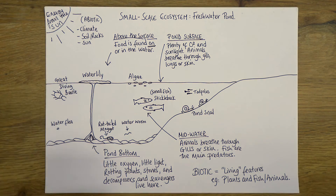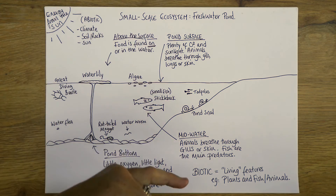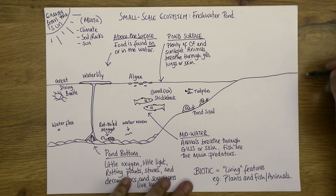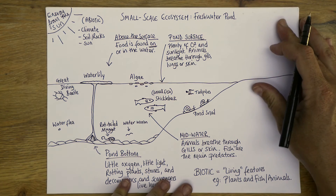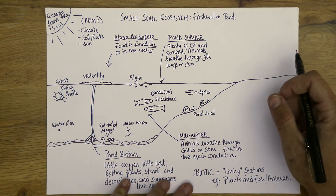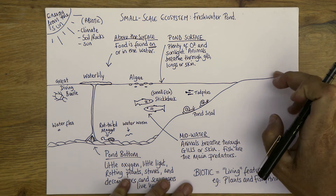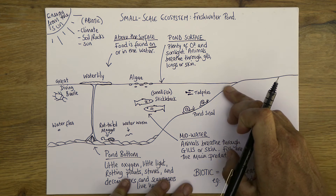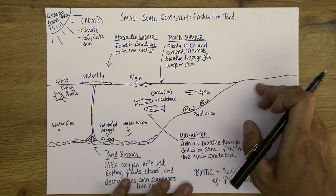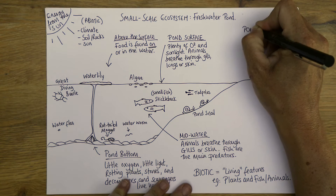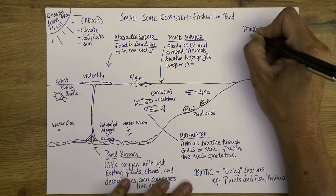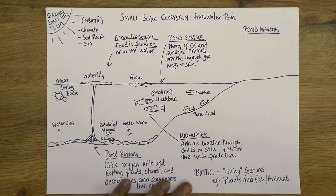We've covered the pond bottom, above the surface, the surface, and the mid-water section. Now let's look at the pond margin — the area around the edge. You might wonder why we're looking at this since it's not the pond itself, but it's an important zone. When the water level is high the pond margin is quite small, and when the water level drops the pond margin increases. It's a fluctuating, dynamic area of the pond.